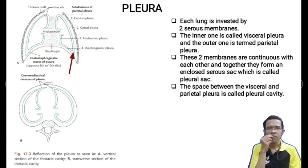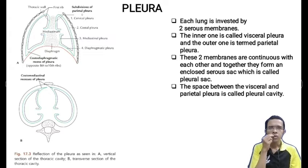The space between the visceral and the parietal pleura is called the pleural cavity. This pleural cavity is filled with a very little amount — 5 to 10 ml — of serous fluid which is called the pleural fluid, which keeps both layers of the pleura lubricated and helps them move against each other with very little friction.